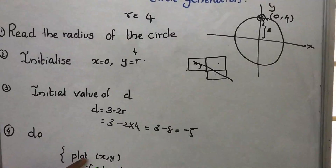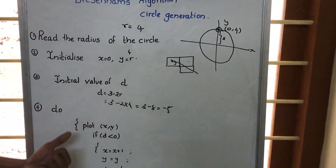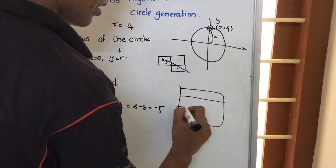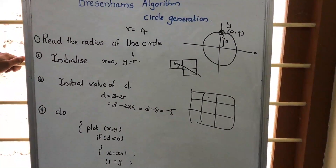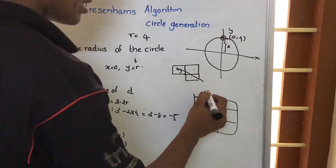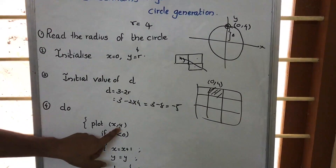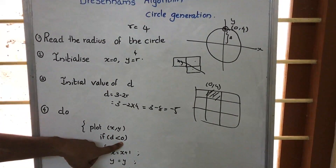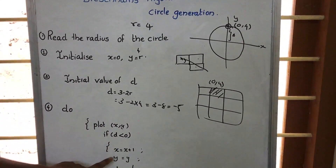Next step is: do — we are entering the do-while loop. So do plot (x, y). x is 0, y is 4. This is the pixel representing (0, 4), so this pixel will be highlighted. We have plotted x and y, that is the pixel at (0, 4). Now, if d is less than 0 — yes, in our case d is less than 0, d is minus 5 — then we have to enter here.